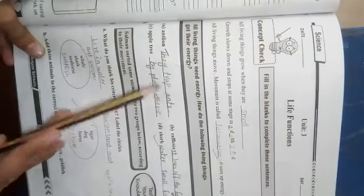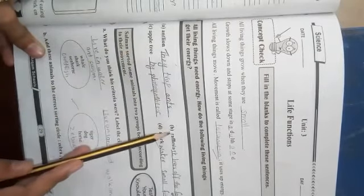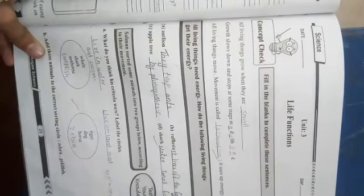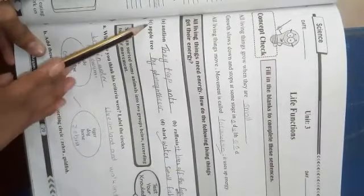Part A है, Ant lion. They trap ants. Ant lion, ants खाती है. इसके बाद B है, Reflasia. It lives off the food made by other plants. ये जो है, food made by other plants पे depend करते हैं.